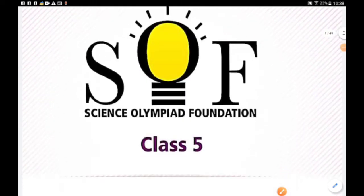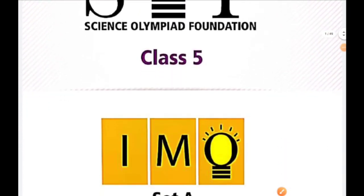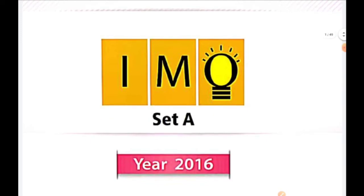This video contains Class 5 IMO 2016 year paper, Set A and Set B, Achiever Section questions solved. I have already uploaded the last 5 year papers of achiever questions — you can find the link in the description box. Go through the video to know what type of questions and what kind of pattern has been followed throughout the years.